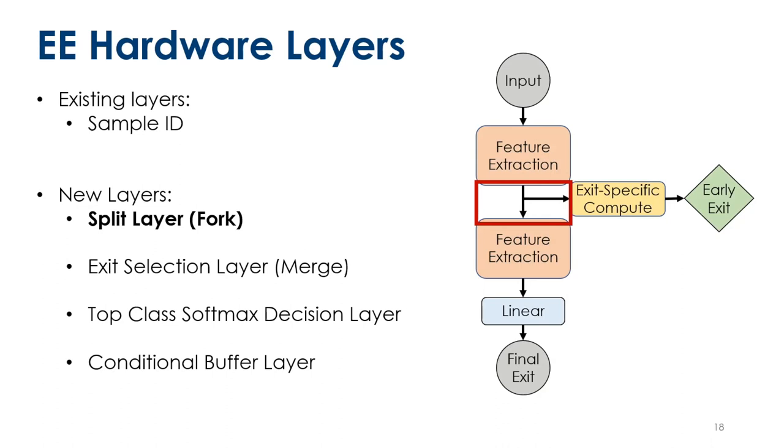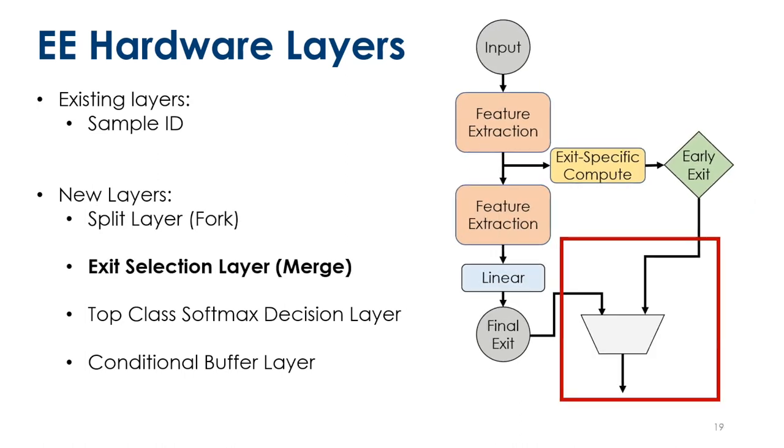This includes a split layer which performs this fork operation for data passing through it. Here we've represented that as these branching arrows. And the exit selection or merge layer which takes the classification results from early and late exits and coherently merges the output streams before streaming those off-chip.